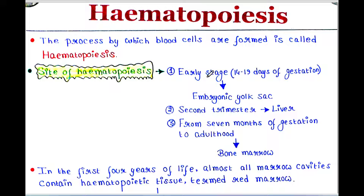In the early stage — at 14 to 19 days of gestation — hematopoiesis takes place in the embryonic yolk sac. In the second trimester, it takes place in the liver. From 7 months of gestation to adulthood, hematopoiesis takes place in the bone marrow.